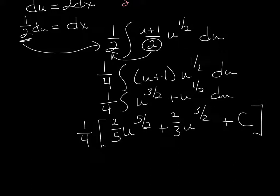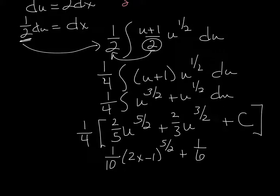And if we integrate, just keep that one-fourth out front, we're going to have u to the 5/2 times 2/5 plus u to the 3/2 times 2/3 plus C. This is an indefinite integral, so we have our plus C. Now we have to substitute back in what we said u was — u was originally 2x minus 1. So we get (1/10)(2x minus 1) to the 5/2 plus (1/6)(2x minus 1) to the 3/2 plus C. One-fourth of a constant is still a constant, so we just leave it as C.